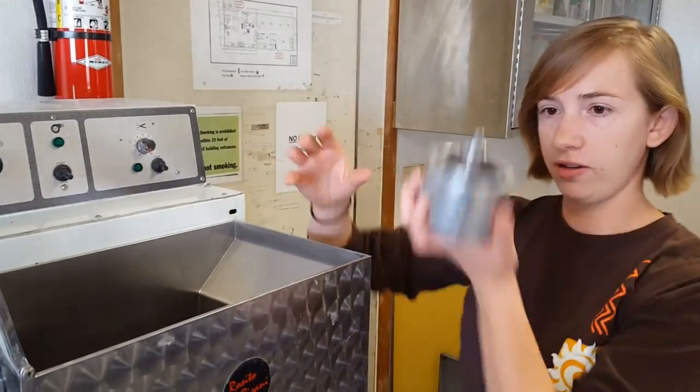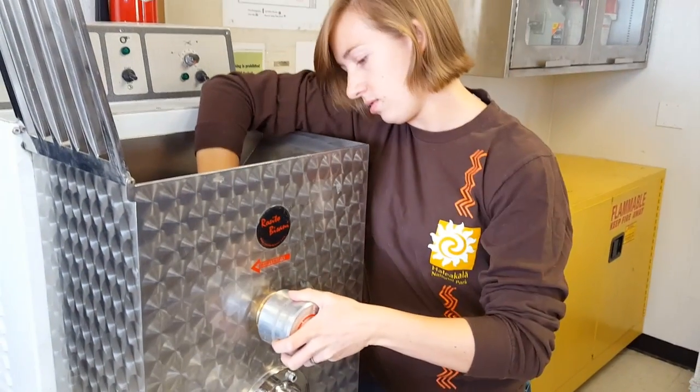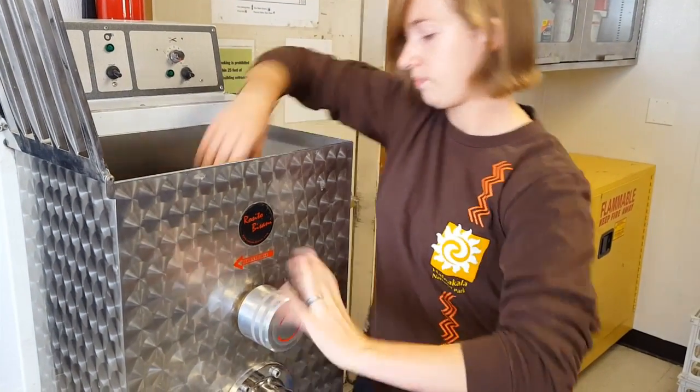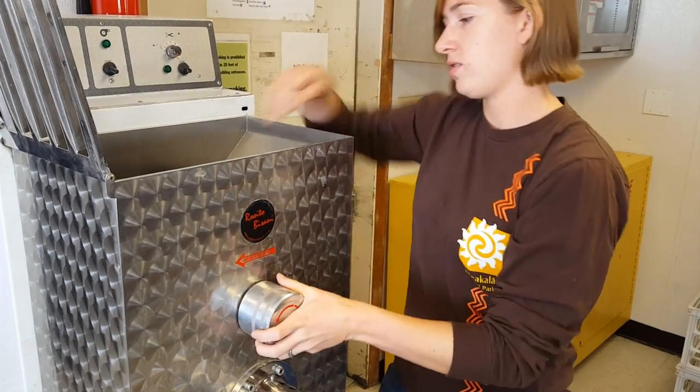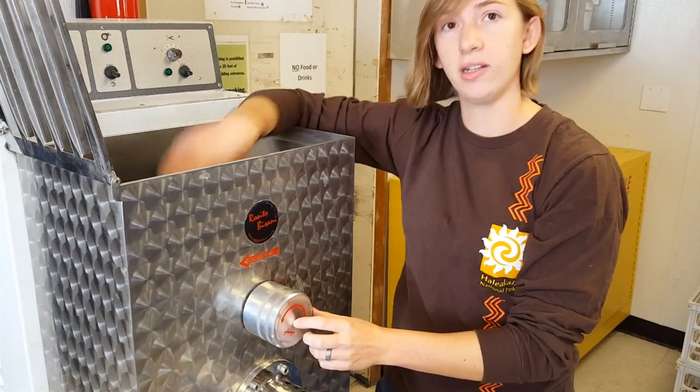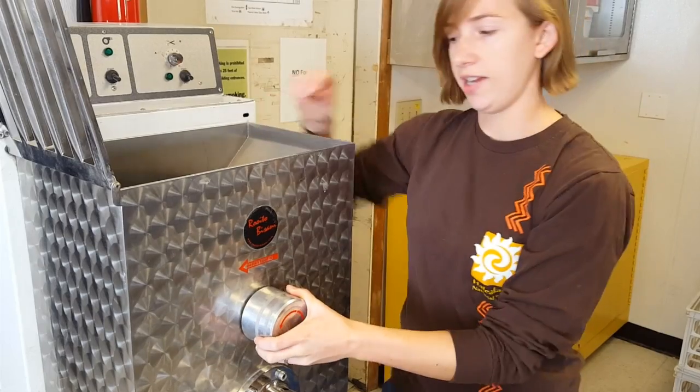Then to secure that piece, you'll screw this in right here. Make sure that it's tight. Once the machine starts running, sometimes this will loosen, so you'll just turn it off and retighten it after it's adjusted.